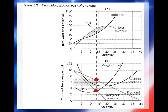A monopolist maximizes profits by producing the quantity of output where marginal cost equals marginal revenue — MC equals MR. Chart A shows the widest point of profit, where costs are lowest and revenue is highest in comparison to each other. That is at the dotted line, which is 13 units.